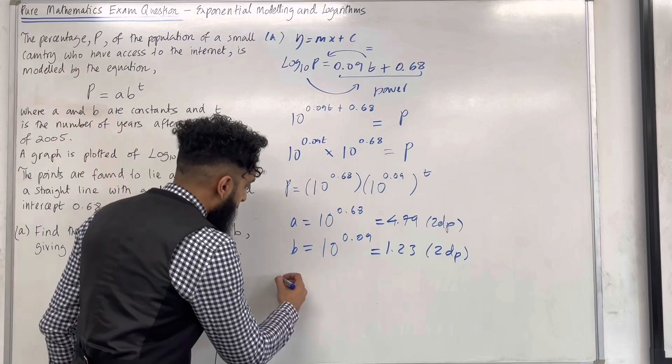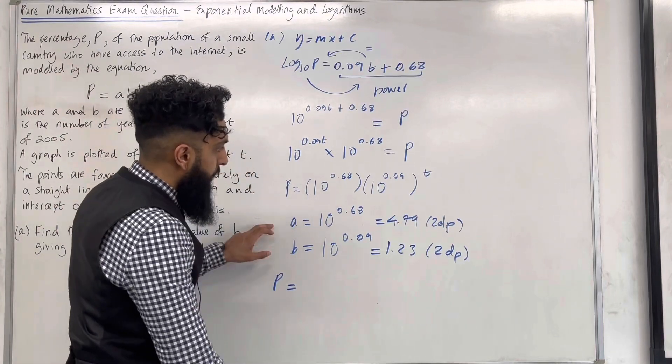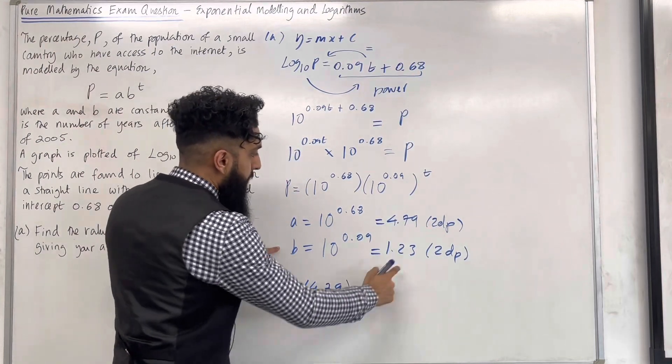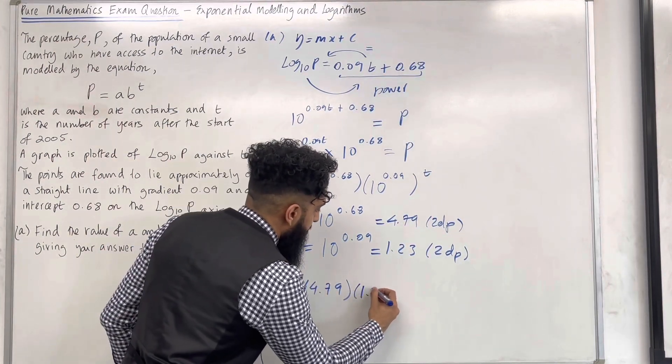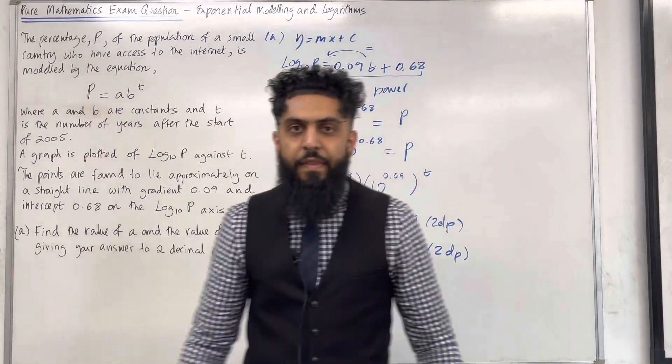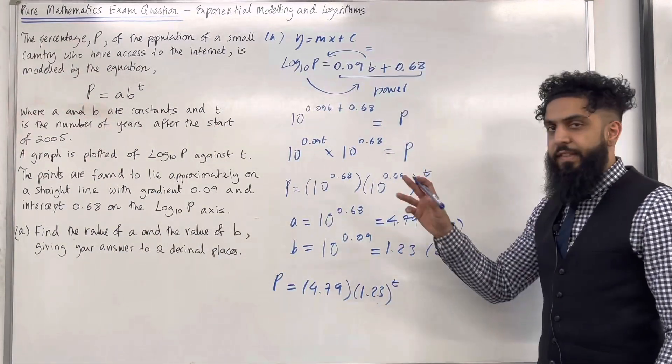Okay, so the model P is equal to the A value to two decimal places which is 4.79 multiplied by the B value to two decimal places which is 1.23 raised to the power T. And that there completes part A of this exam question.